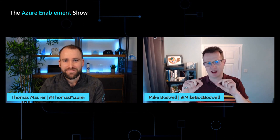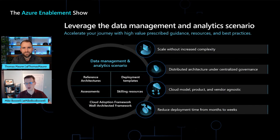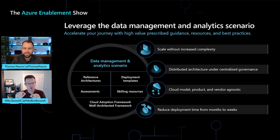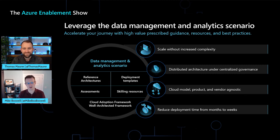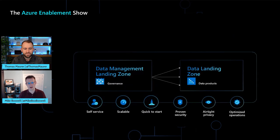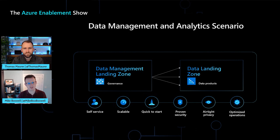Before we look at how Azure landing zones come together, let's take a higher-level look at the data management analytics scenario. You can see an all-encompassing circle — we've talked about scale, distributed architecture, cloud model, and time to deployment. We're not trying to write the next book or document — it's how do we make it real? So there are reference architectures, assessments, deployment templates, skilling, and Well-Architected — hence why we call these enablement scenarios. We're building on top of cloud adoption landing zones, the Cloud Adoption Framework, and Azure landing zones. We think of our scenario in two elements: a data management landing zone, which manages governance across the whole platform, and data landing zones for data products, data domains, and analytics workloads.